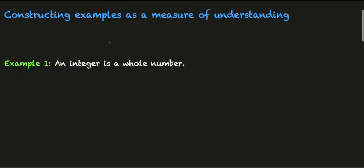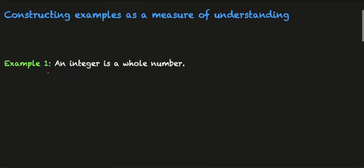So let's start with the following very simple example. An integer is defined to be a whole number. An integer is typically denoted by a bold Z.